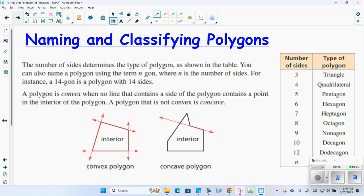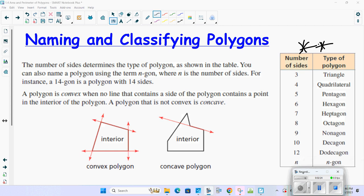Notice over here there's a chart that you will need to know. Three sides is a triangle, four is a quadrilateral, five is a pentagon, six is a hexagon, seven is a heptagon, eight is an octagon, nine is a nonagon, ten is a decagon, twelve is a dodecagon. If we ever get something more than that, like 15 sides, we would call that a 15-gon. So whatever the number of sides are, plus -gon.